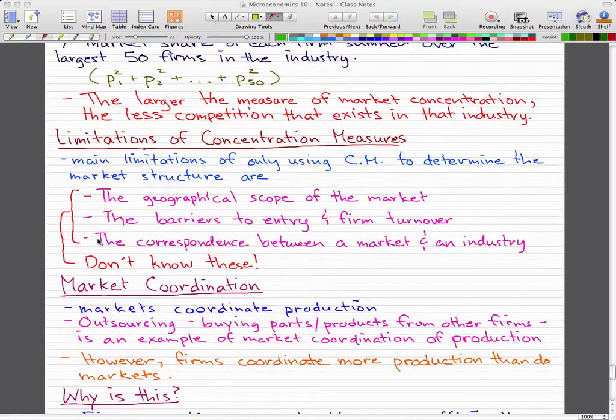the barriers to entry and firm turnover, and the correspondence between a market and an industry. These factors, we don't know any of these. So they're the main limitations of using concentration measures to determine the market structure.